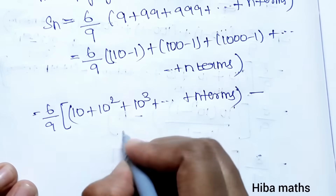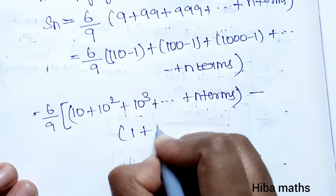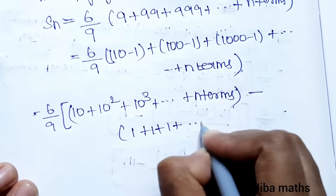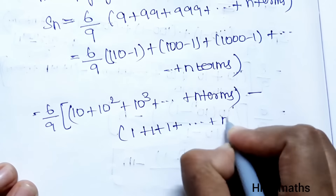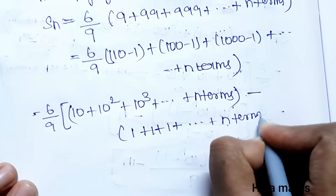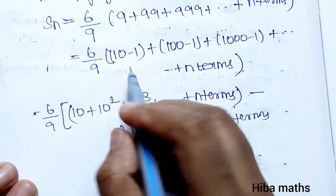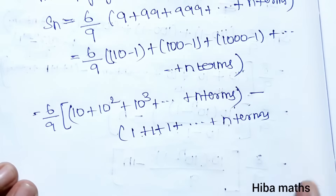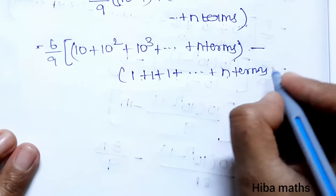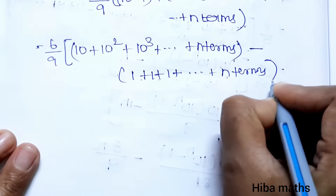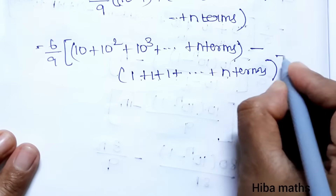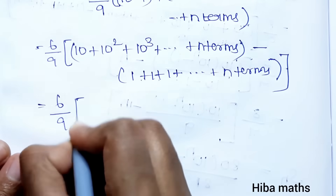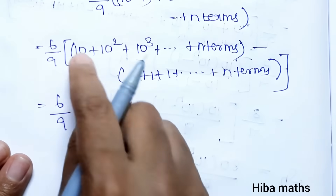This separates into (6/9) times [(10 + 10² + 10³ + ... up to n terms) minus (1 + 1 + 1 + ... up to n terms)]. The second part sums to n.